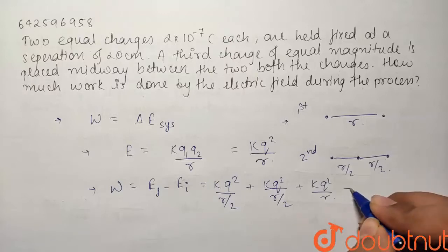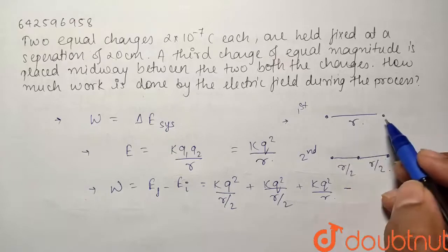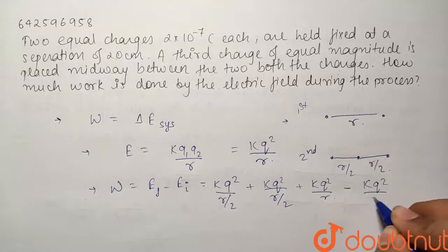And similarly what is E_final minus E_initial? E_initial, we had only one interaction between these two charges and its value was nothing but KQ²/R.